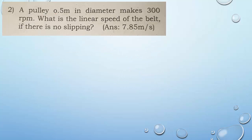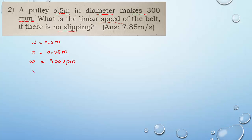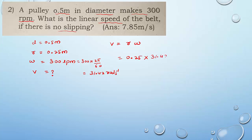Next: a pulley 0.5 meter in diameter makes 300 revolutions per minute. What is the linear speed of the belt if there is no slipping? Diameter D = 0.5 m, so radius R = 0.25 m. ω = 300 rpm = 300 × 2π/60 = 31.42 rad/s. Using V = Rω: V = 0.25 × 31.42 = 7.855 meter per second. This is the linear velocity of the belt.